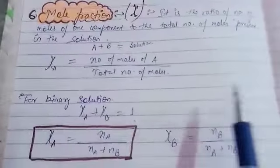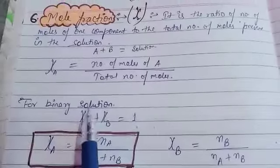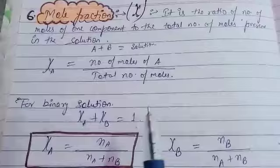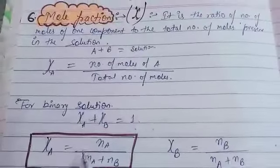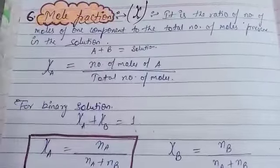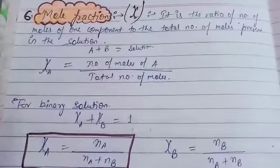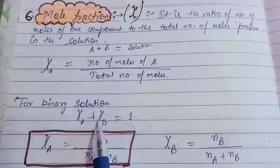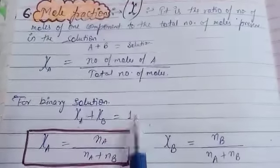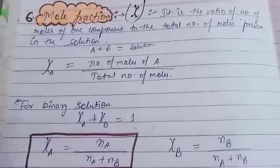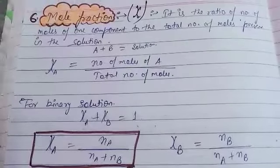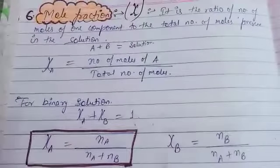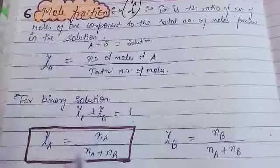Remember: binary means two components, so a solution formed by two components is a binary solution. Three components gives a ternary solution, and four components gives a quaternary solution. For a binary solution, the mole fraction of A plus the mole fraction of B equals 1. For a ternary solution, mole fraction of A plus B plus C also equals 1. You can use this to verify your answers.